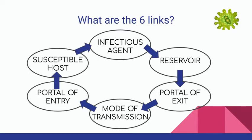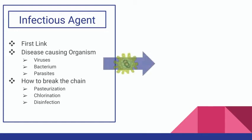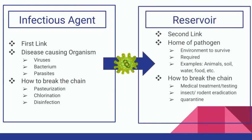Looking deeper into the components, we can see that the infectious agent, the first link, is what is known as the disease-causing organism, which can take form as a virus, bacterium, or parasite. To prevent further spread, we need to break the chain. This includes pasteurization of milk, chlorination of water, or disinfection. However, if this chain isn't broken, the pathogen can spread to the reservoir, the second link.